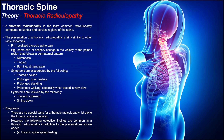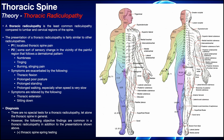P2 isn't necessarily a pain — it's some sort of sensory change in the vicinity of the painful region that generally follows a dermatomal pattern. Here's the map of the dermatomes of the body. For example, with the T6 nerve root, P1 would be localized thoracic spine pain in that vicinity, but you'd also have a sensory change following the T6 dermatomal pattern. It can wrap around the side and move anteriorly, though those sensory changes are more commonly posterior.